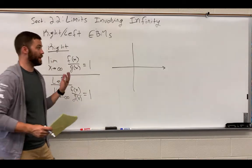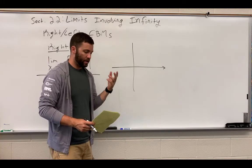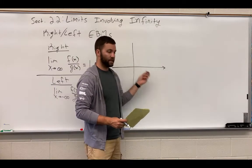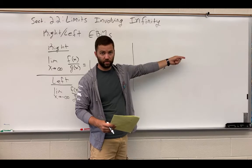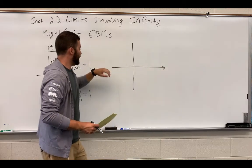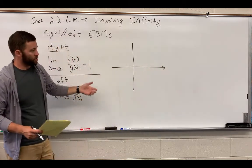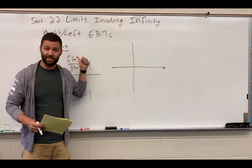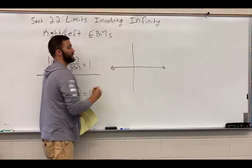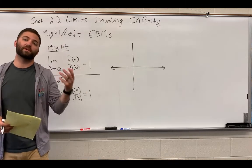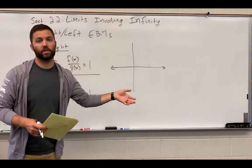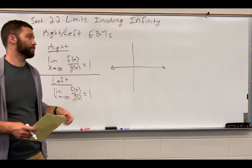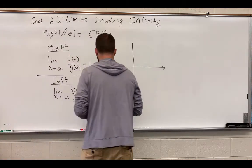Right end-behavior model means a function which models the given function to the right. We're not worried about the left-hand side. The left end-behavior model is a function that models the given function to the left, in the direction of negative infinity. Some functions have behavior that can be characterized quite well to the right by one function and to the left by another function.